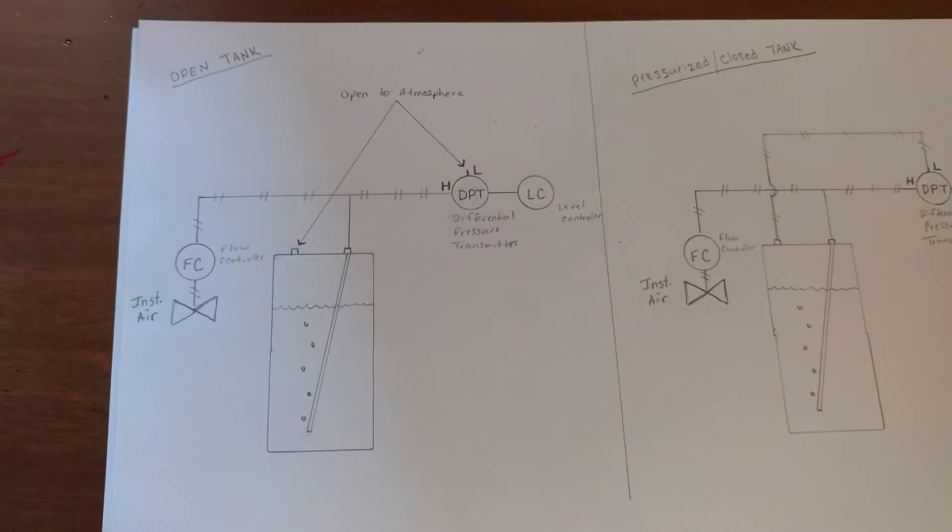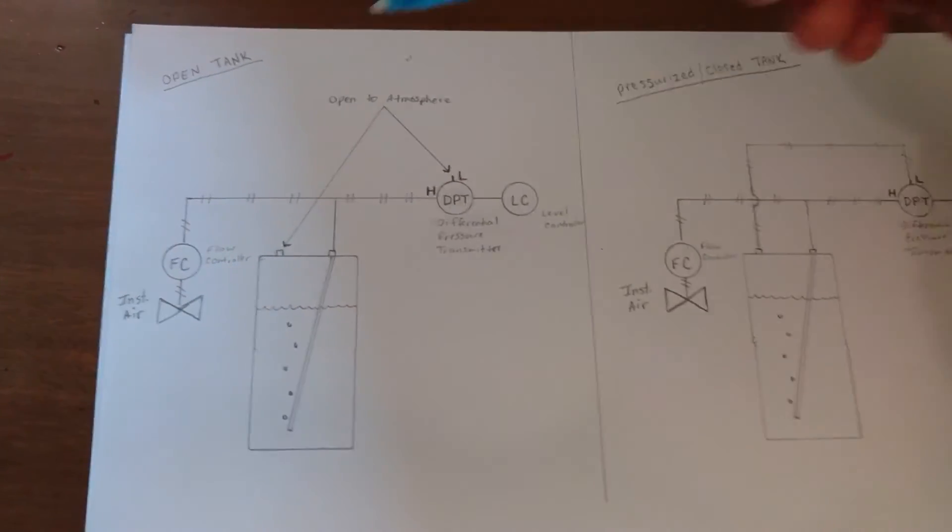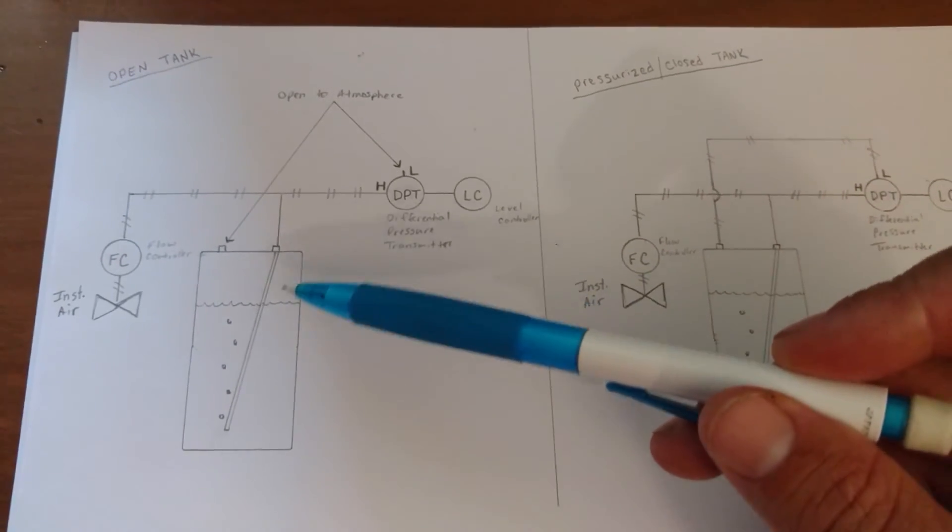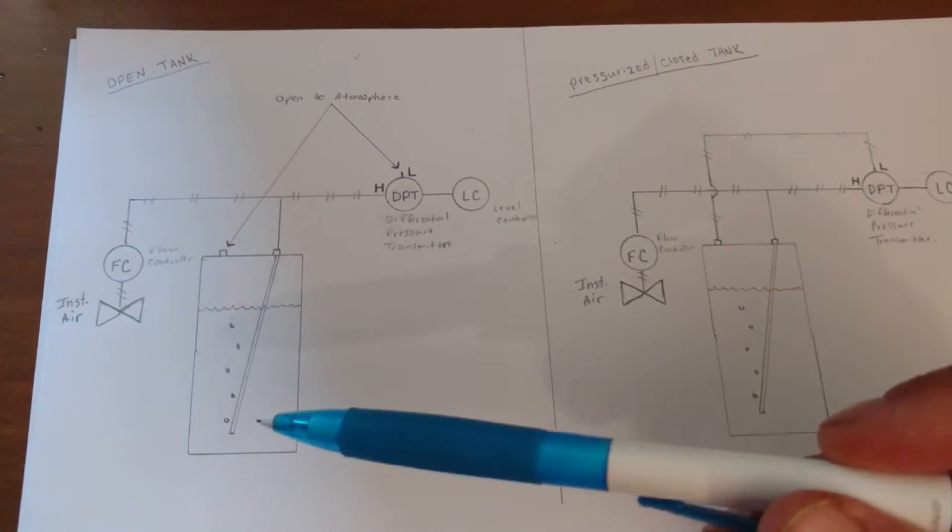So what happens is you're going to generate bubbles by controlling some type of air supply that is going to be fed into a tube that goes close to the bottom of the vessel.